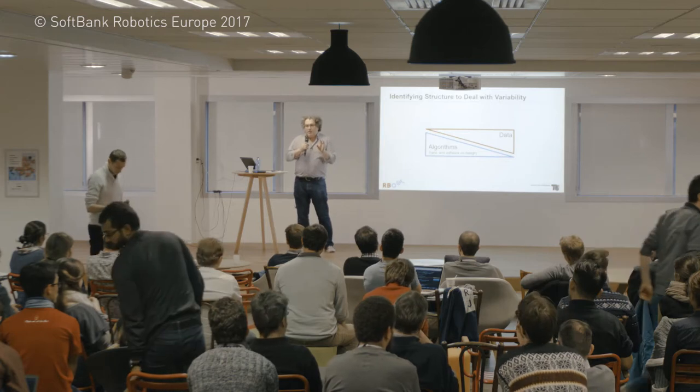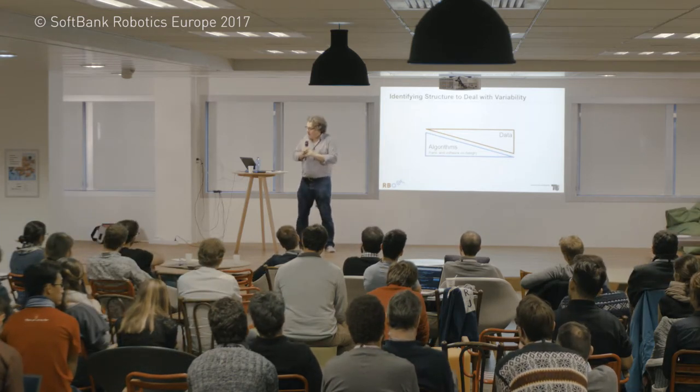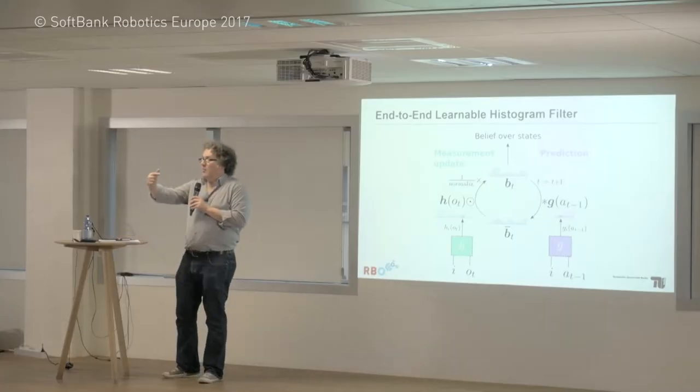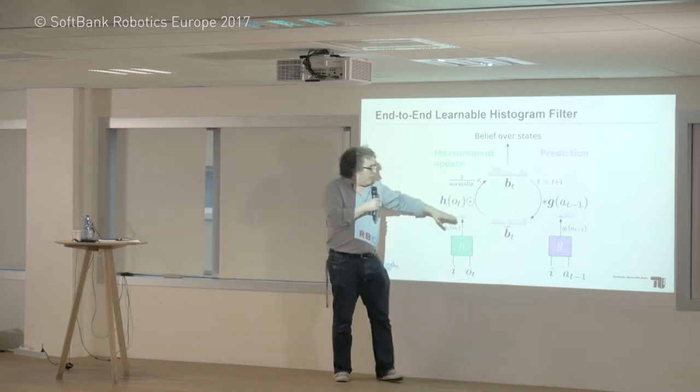The recursive loop inherently does prediction. Prediction is an essential part of extracting this information because recursive estimation does exactly that — it predicts the state into the future and then compares this prediction with what it's actually seeing.